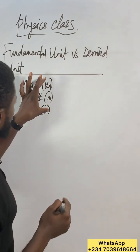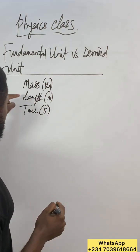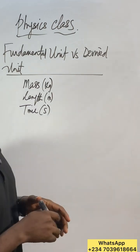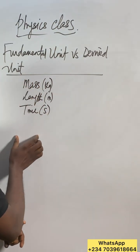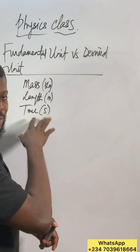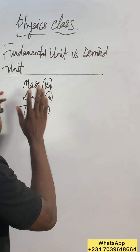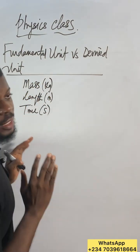All these ones you have are the fundamental units of these fundamental quantities. These are the basic fundamental quantities. There's also temperature, amount of substance, electric current, luminous intensity - all of them are fundamental quantities and they have their own fundamental units.